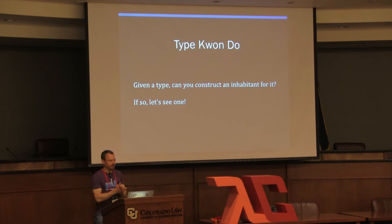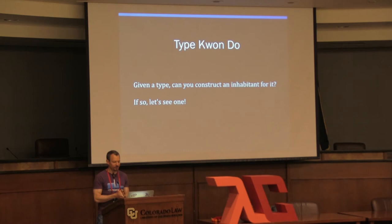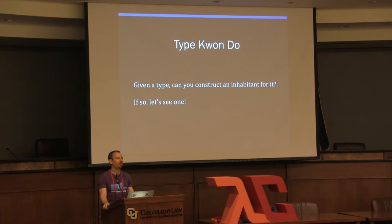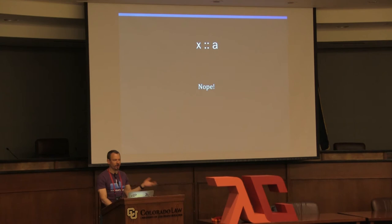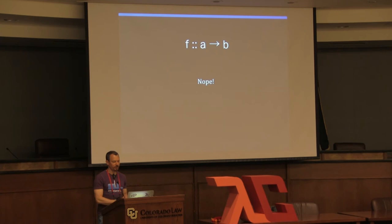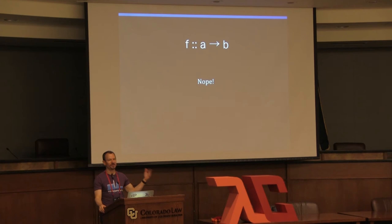Now let's do some exercises: Type Kwon Do. Given a type, can you construct an inhabitant for it? The idea is to leverage propositions-as-types intuitions to build intuitions for type-driven development — it actually helps you write code to think this way. Review: a type variable 'a' — the proposition is every type is inhabited, but it isn't (bottom isn't), so uninhabited. A function from A to B for arbitrary A and B — we can't construct an inhabitant of B from nothing, so not doable.